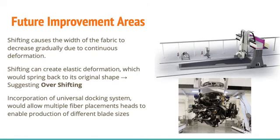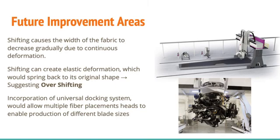Before wrapping up, there are some issues and areas of improvement to discuss. The first issue with ALP is that due to continuous deformation, the width of the fabric decreases gradually. Another issue is that shifting can sometimes create elastic deformation, which would spring back to its original shape, creating unexpected inaccuracies in the fabric. One possible solution for this would be overshifting, in which the fabric is shifted at an angle larger than the originally intended one, leaving enough space for elastic deformations to revert back. If applied properly, this would further reduce inaccuracies and make the process more repeatable. One final area of improvement would be incorporating a universal docking system, similar to the system used in automated fiber placement, which would allow multiple fiber placement heads to be utilized to accommodate different blade shapes and sizes.